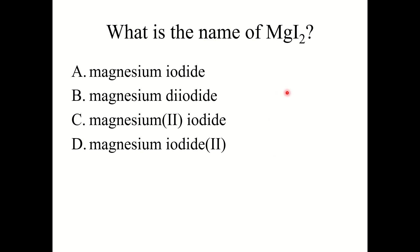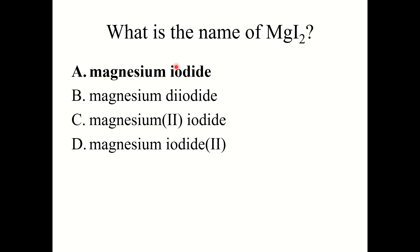Knowledge check: What is the name of MgI2? The correct answer is magnesium iodide. MgI2 is an ionic compound with a metal and a non-metal. It's a monatomic ionic compound — one element for the cation, one for the anion. We name the cation as it is in the periodic table: magnesium. Then the anion, iodine, gets the "-ide" ending: iodide. So the name is magnesium iodide. No prefix or Roman numerals are needed here.